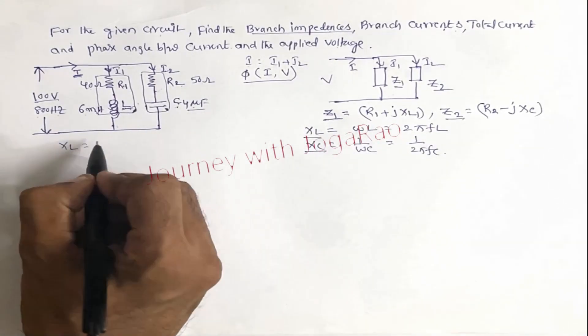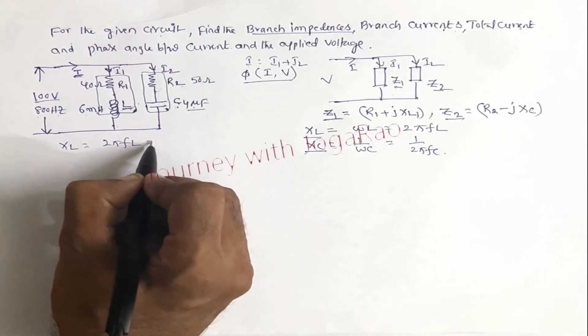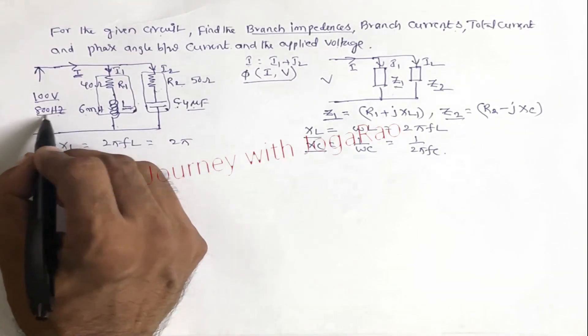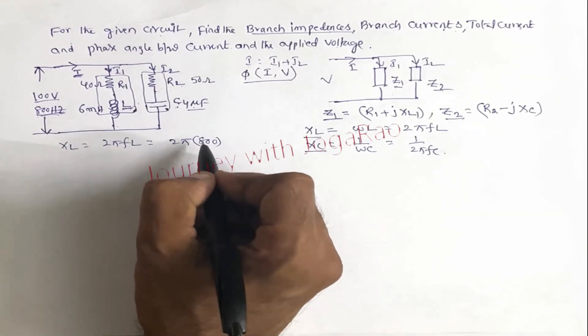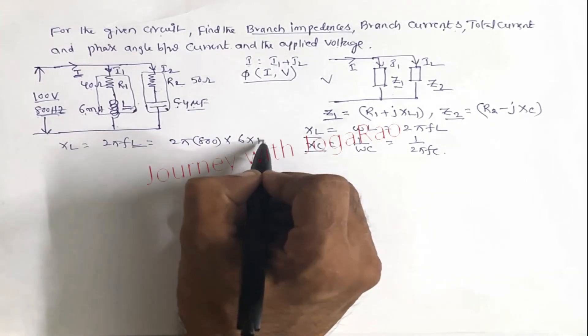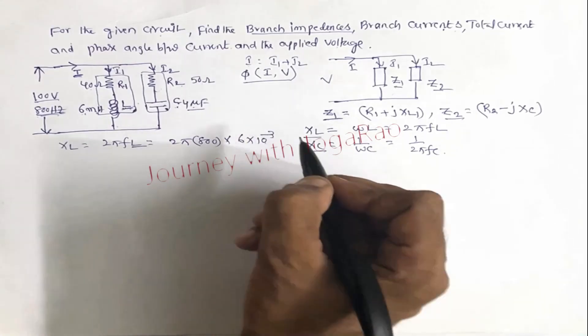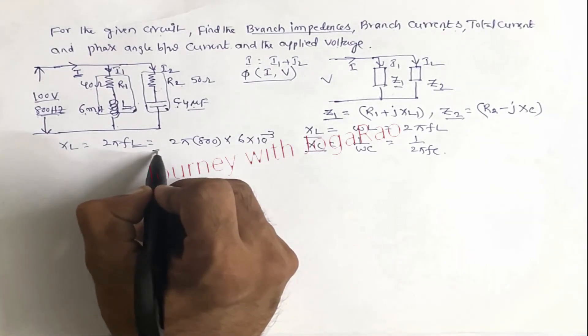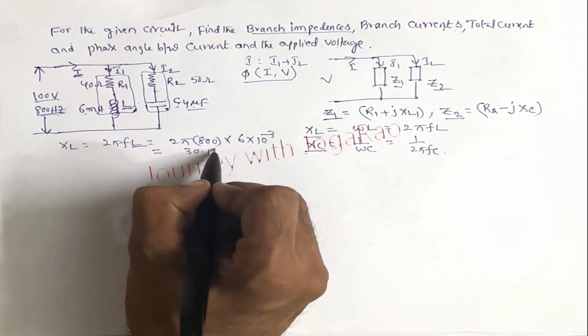Therefore xl is equal 2 pi f L. 2 pi, f is frequency 800, into L is 6 into 10 power of minus 3. Then simplify this. That is 30.16 ohms.